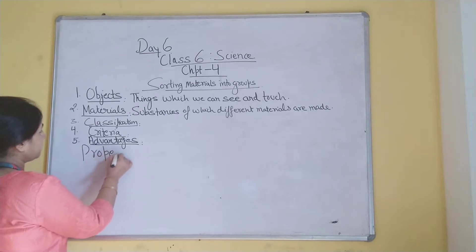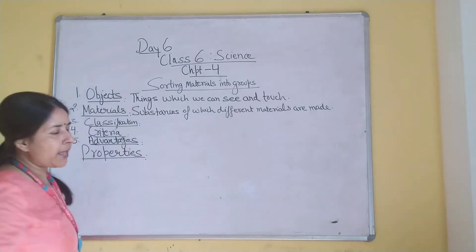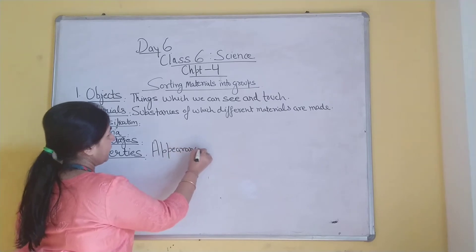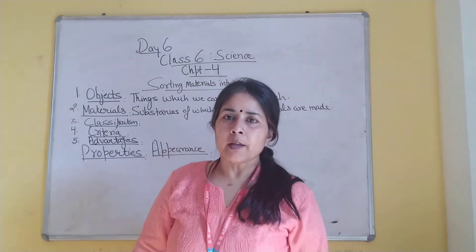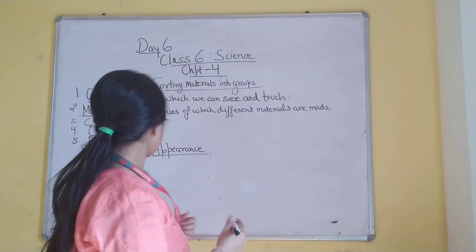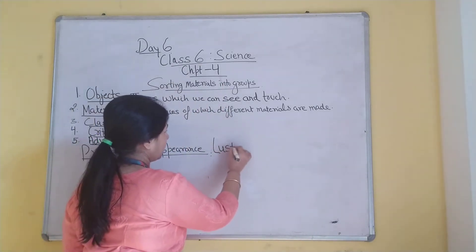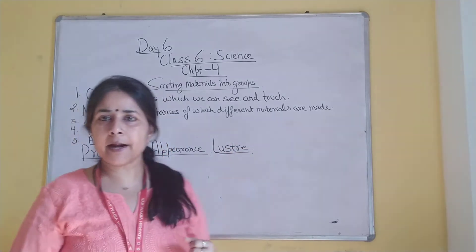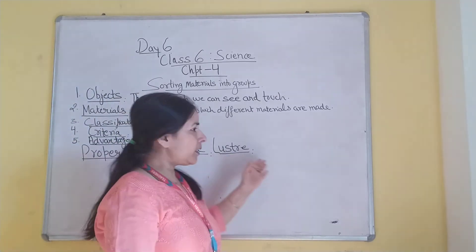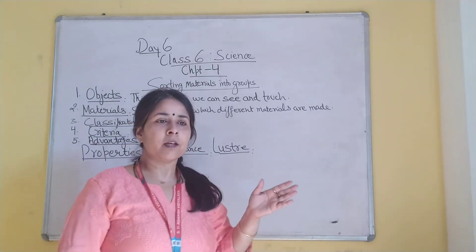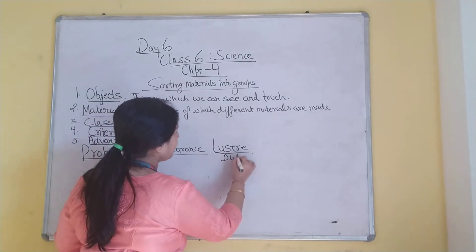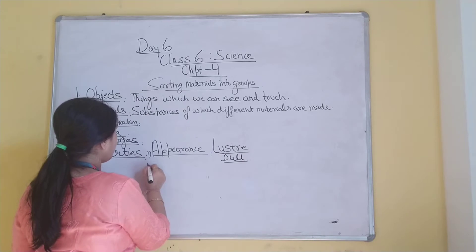After that we talked about different properties of materials. First, we discussed materials which shine naturally and some which do not shine, and we learned the term luster. Luster is a term used for materials that shine. We can say metals are lustrous — they are shiny. Luster is nothing but a term used in place of shining; things which shine are lustrous.